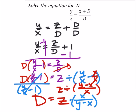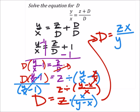Which, and I'll just move this up here, would be D equals, just fraction multiplication in this case, ZX over Y minus X.